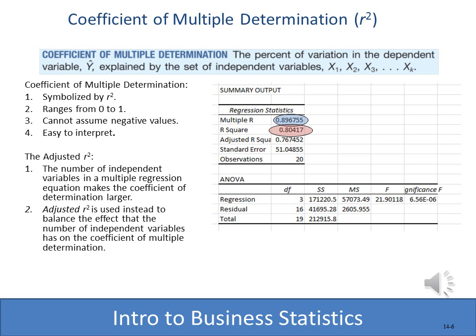We use R and R-squared to determine the strength of the relationship or the correlation between the variables. We have something called the coefficient of multiple determination, which is still R-squared. In this case R-squared is 0.83. Because a larger number of independent variables can skew that value, we'll often use the adjusted R-squared, which is more accurate and helps balance the effect of having multiple independent variables.